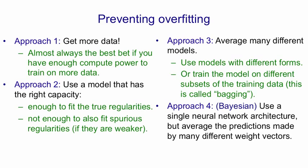And the fourth approach, which is the Bayesian approach, is to use a single neural network architecture, but to find many different sets of weights that do a good job of predicting the output. And then on test data, you average the predictions made by all those different weight vectors.